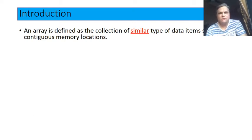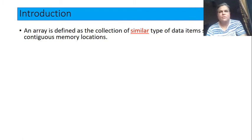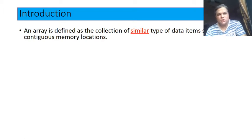Whenever we want to store and process a set of values — maybe a set of integer values, float values, or characters — and these values are related to each other, we can create an array to store and process such sets. Array is a very handy data type for storing and processing similar data type values.